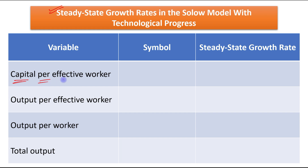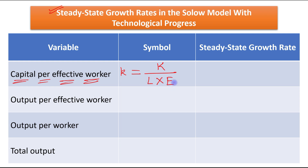The first variable is capital per effective worker, denoted by small k, which is equal to total capital divided by the effective number of workers. Effective number of workers is represented by L times E, where L is total labor and E is the efficiency of labor.